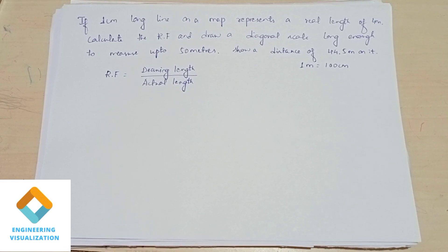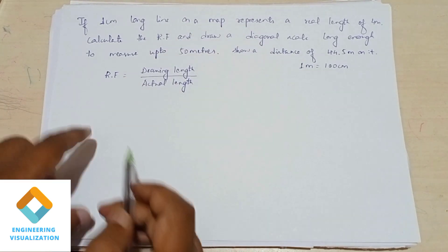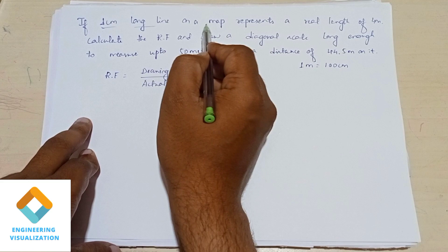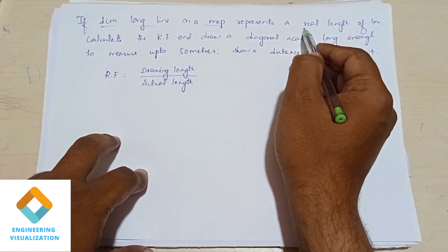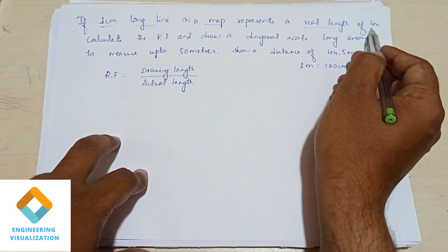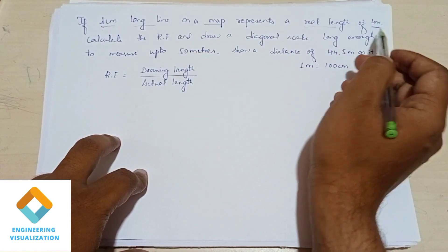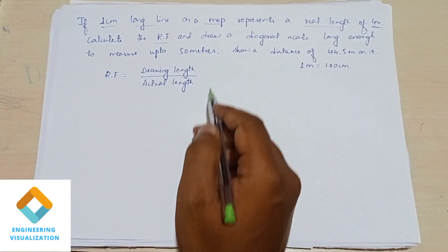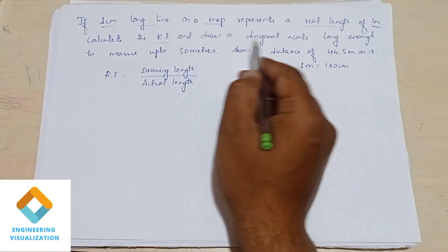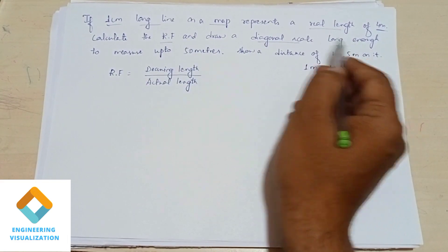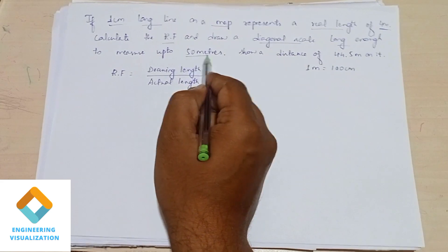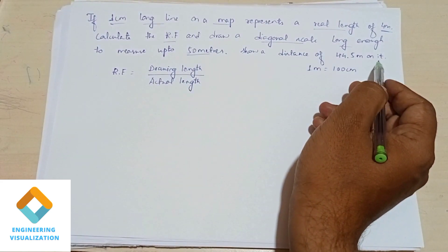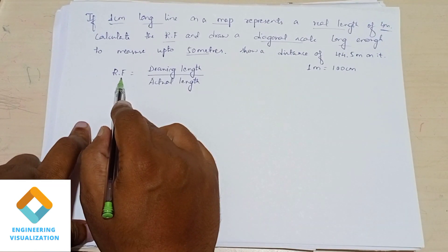Welcome to the engineering visualization channel. Today we are going to do a problem on diagonal scale. If one centimeter on a map represents a real length of one meter, calculate the RF (representative factor) and draw a diagonal scale long enough to measure up to 50 meters.